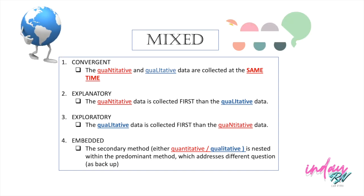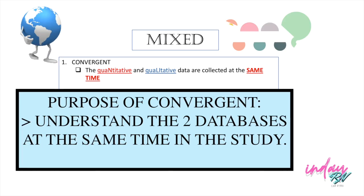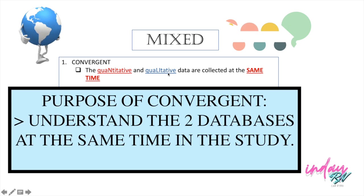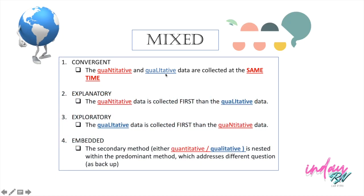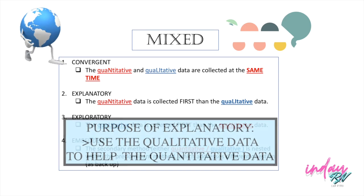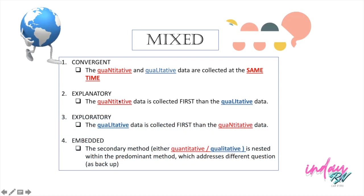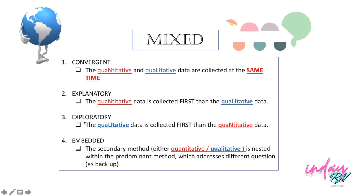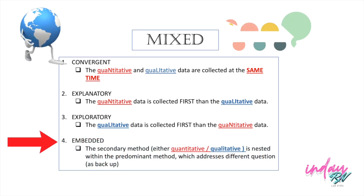So we need to know the purpose of each type. The purpose of Convergent is to obtain a more complete understanding of two databases — it analyzes the quantitative and qualitative data separately at the same time. Here in Explanatory, the purpose is to use qualitative data to help explain the quantitative research — qualitative serves as backup for the quantitative. And vice versa here in Exploratory — the quantitative will back up the qualitative approach.